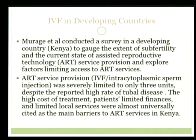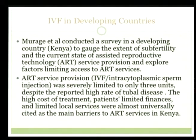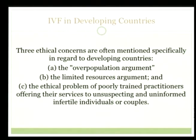Let's begin from Africa. These are some recent published papers from Africa. Muraj et al. conducted a survey in Kenya to gauge the extent of subfertility, the current state of ART provision, and to explore the factors limiting access to ART services. This is a 2012 publication. ART service provision — IVF and ICSI — was severely limited to only three units in the whole country, despite the reported high rate of tubal disease in Africa. The high cost of treatment, patients' limited finances, and limited local services were almost universally cited as the main barriers to providing these services in Kenya.